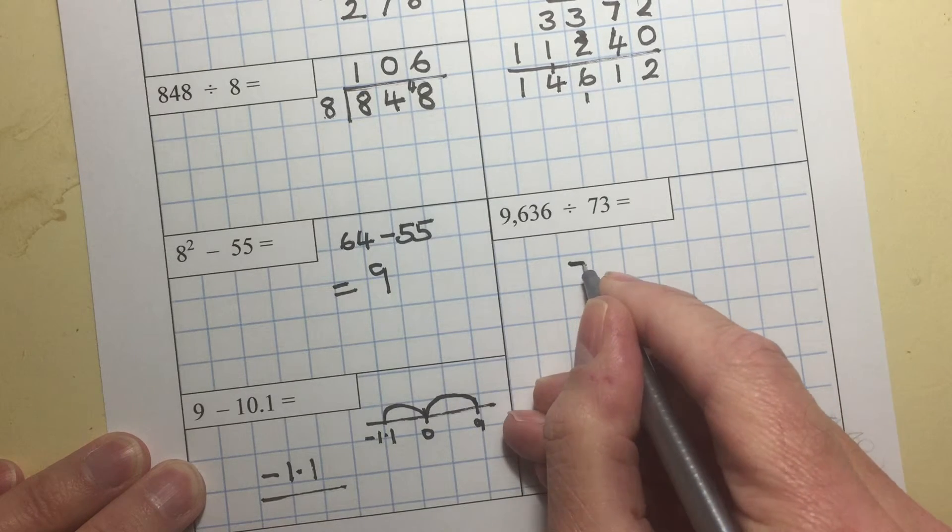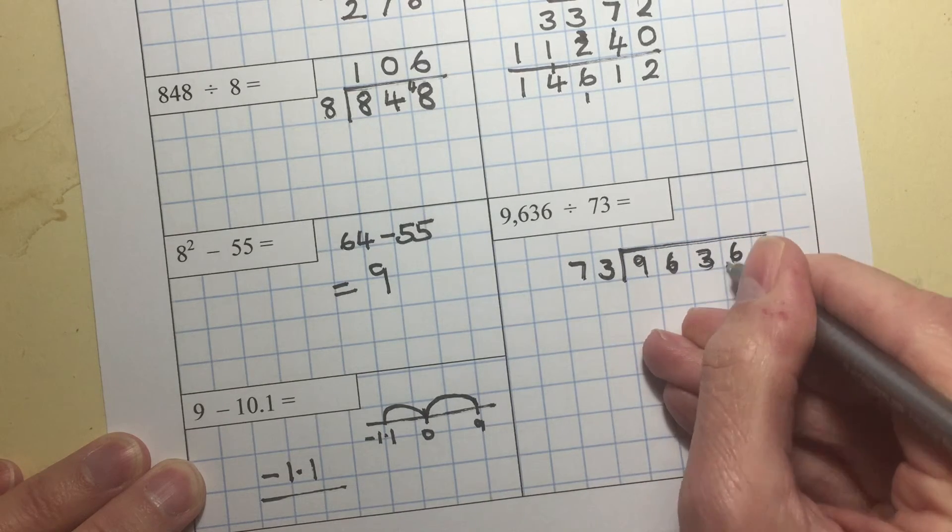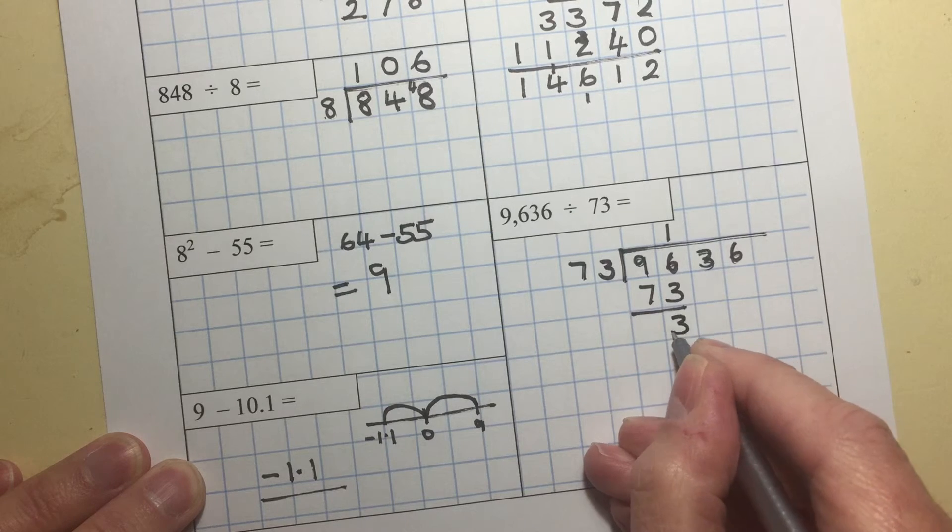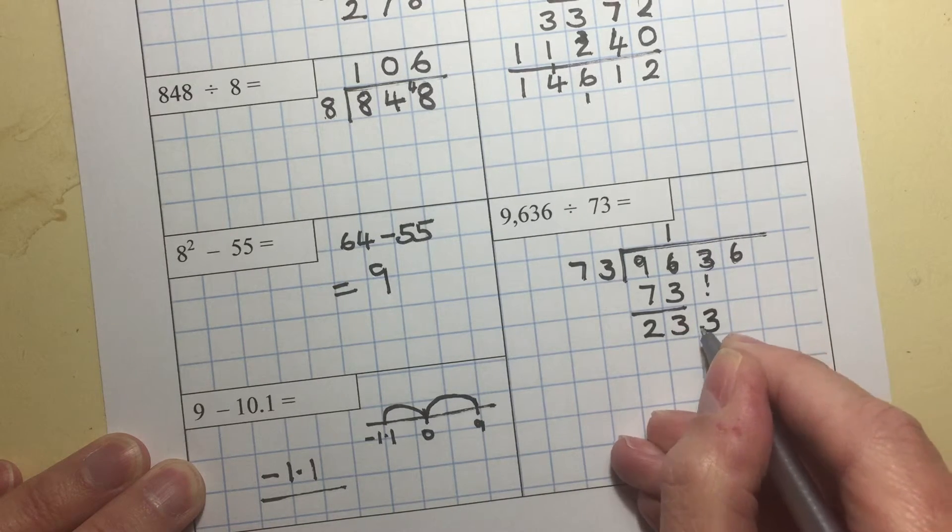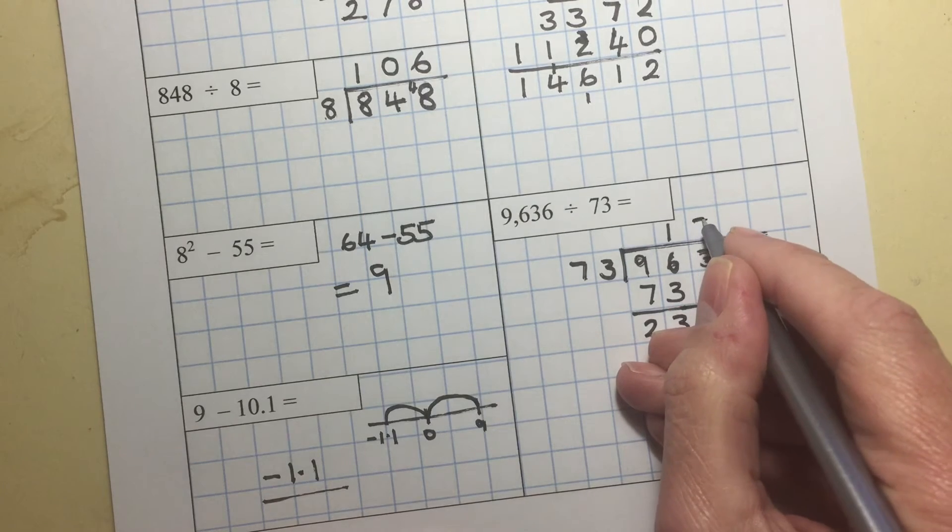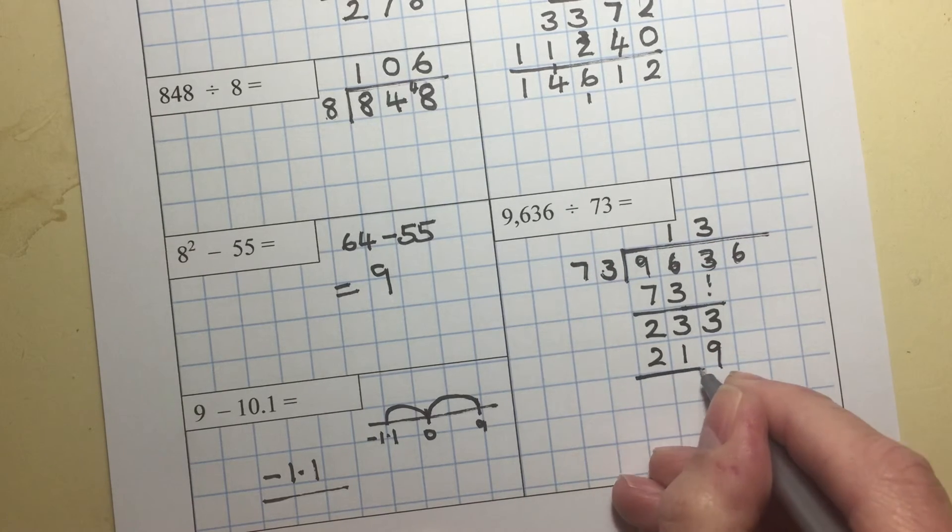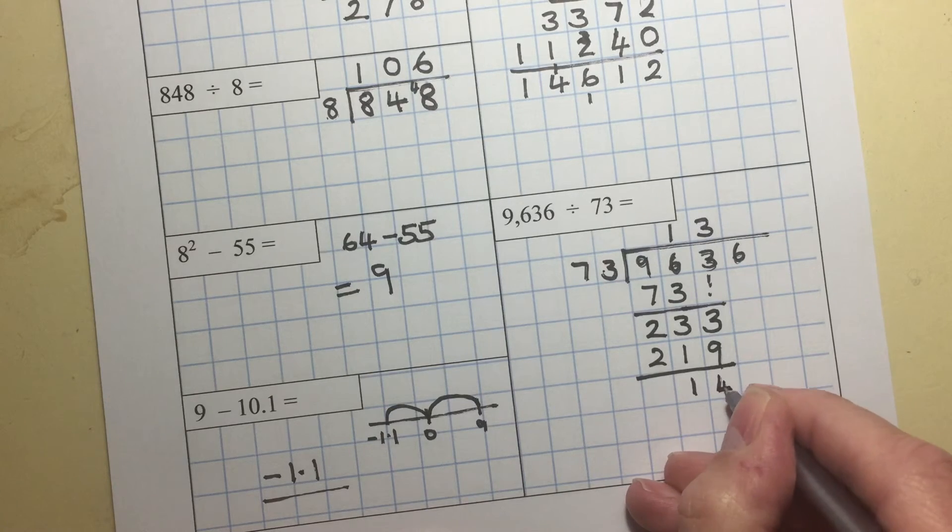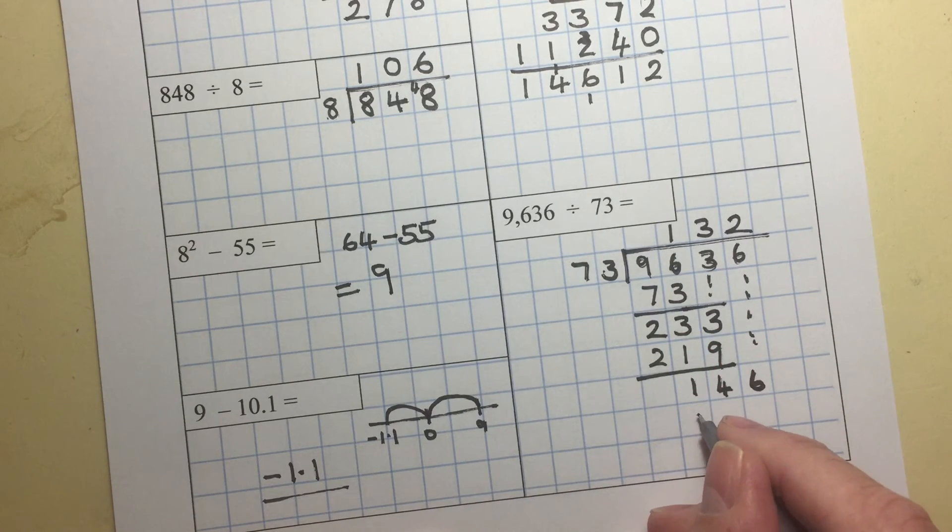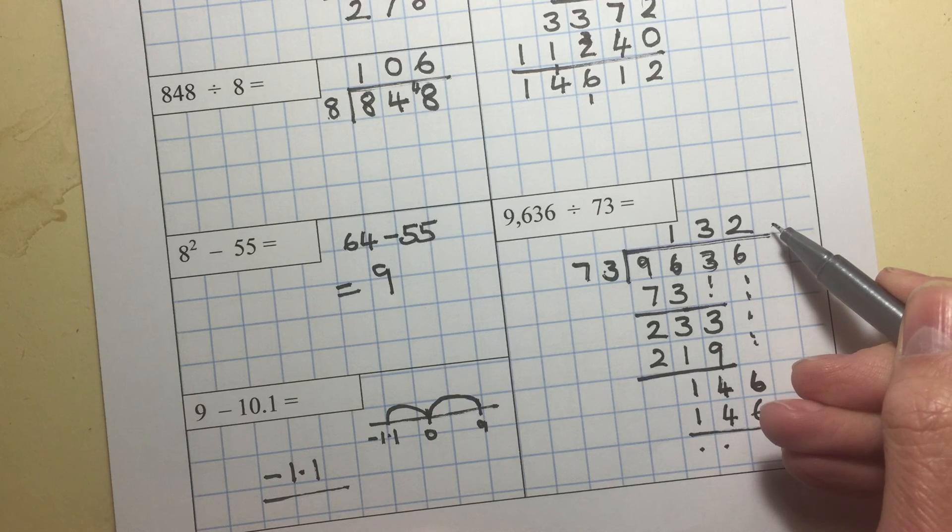And a long multiplication to finish. 73 into 9,636. 73, that's the best that we can do there. Bring down the 3. Looks like 3 is going to work. That's 210. So 3 looks to be okay. 3 times 3 is 9. 3 times 7 is 21. 14. Bring down that 6. 146. And 73 goes into 146, 2 times. 146, 2 times. And so we've got an answer of 132.